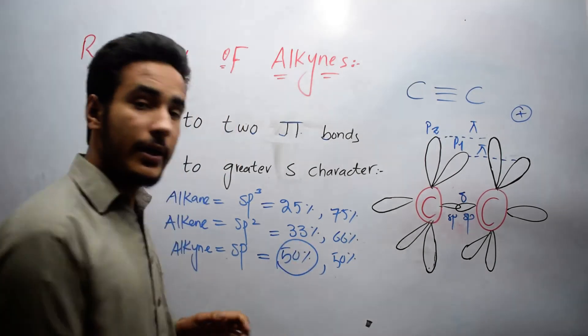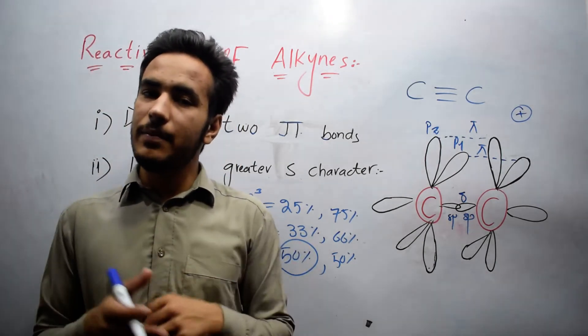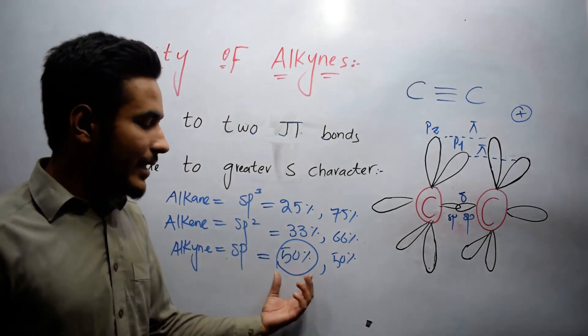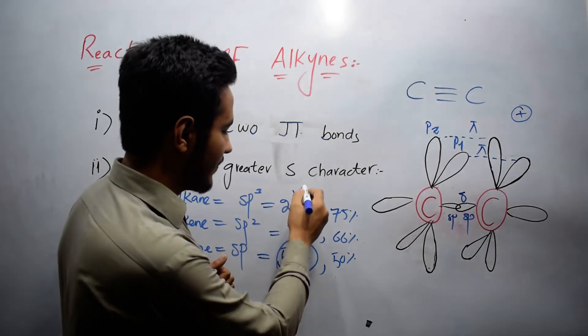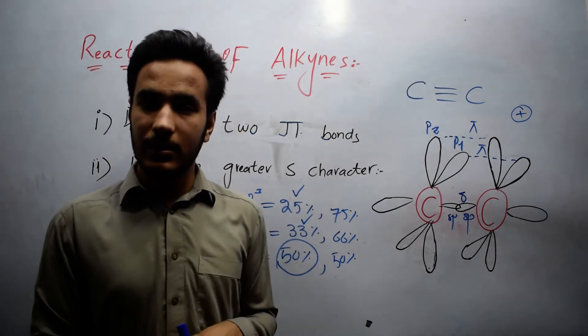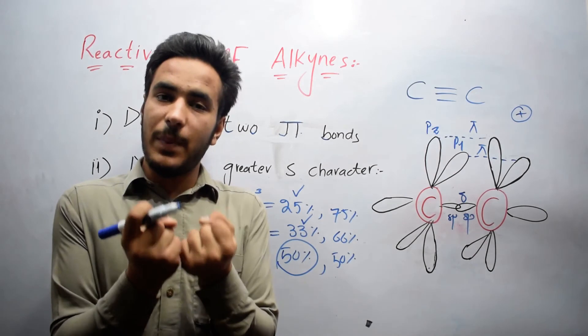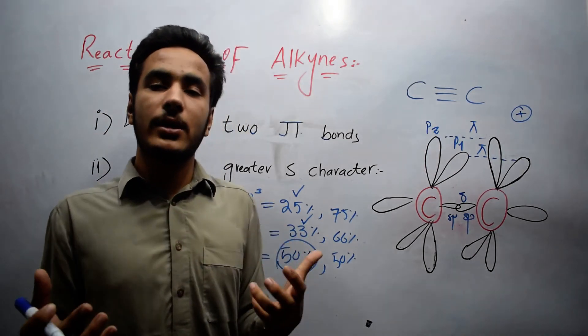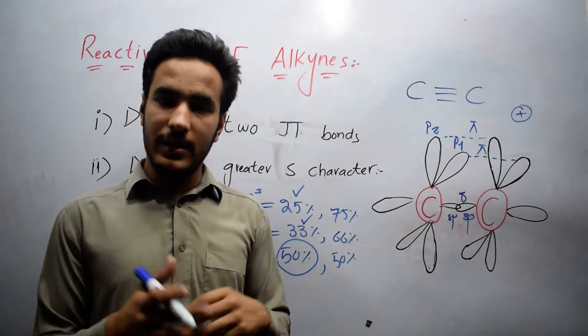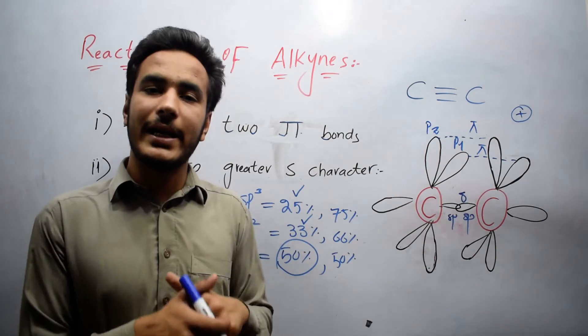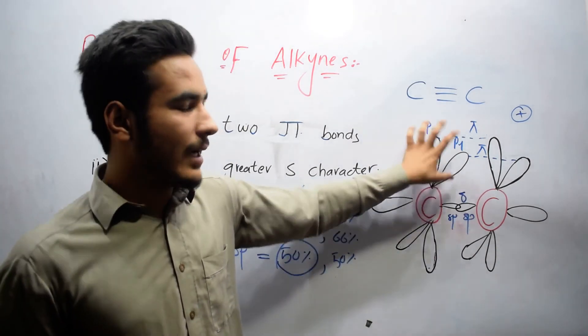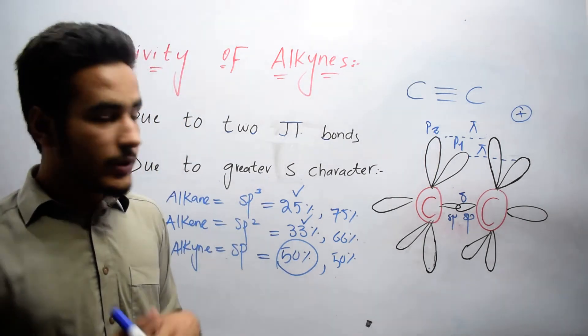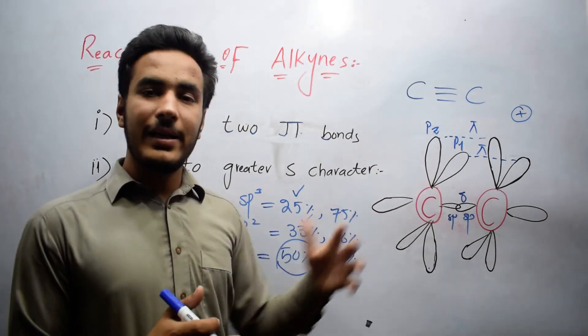We also know that greater the s character, greater will be the hold of nucleus on pi bond. So here in case of alkynes, s character is greater than compared to alkenes. So if they hold pi bond towards itself, when electrophile attacks, they cannot make bond with pi bond easily. We know that sigma bond is stronger. They cannot attack on sigma bond, they will only attack on pi bond. And pi bond is held by nucleus due to greater s character. That's why alkynes is less reactive.